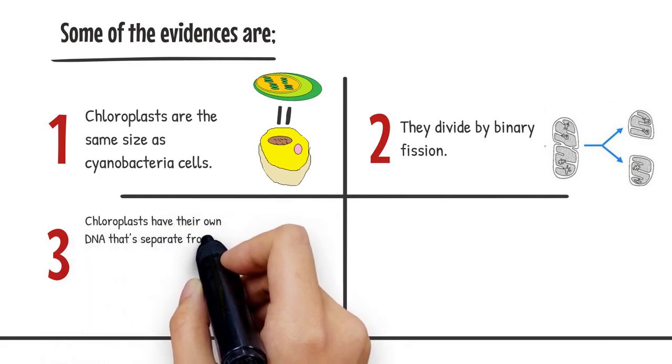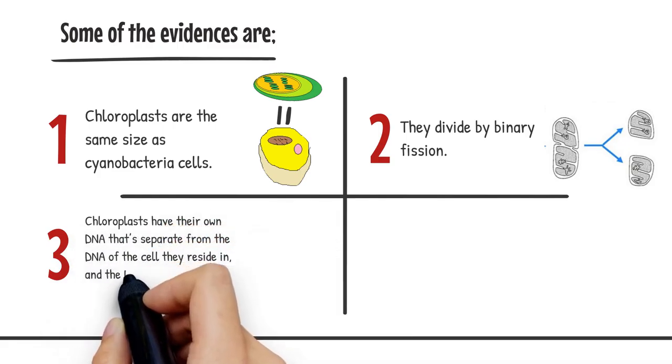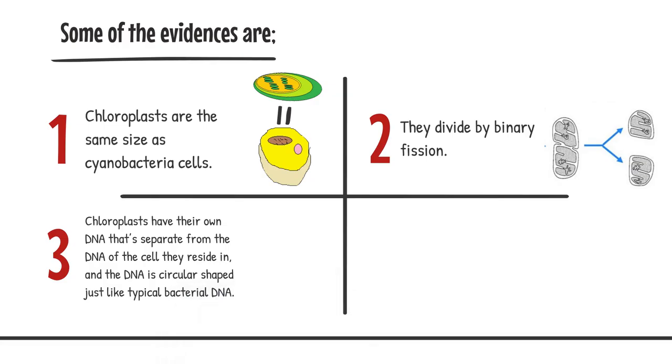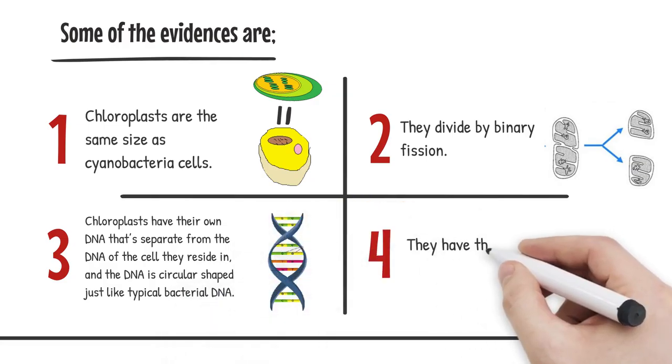Chloroplasts have their own DNA that's separate from the DNA of the cell they reside in, and the DNA is circular shaped just like typical bacterial DNA. They have their very own ribosomes.